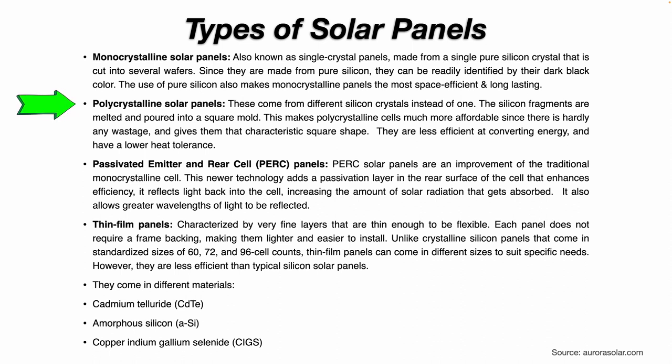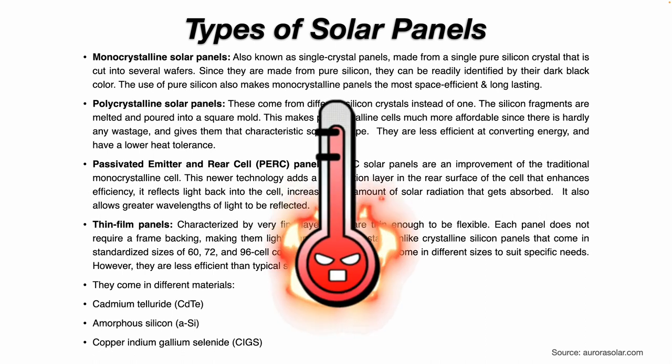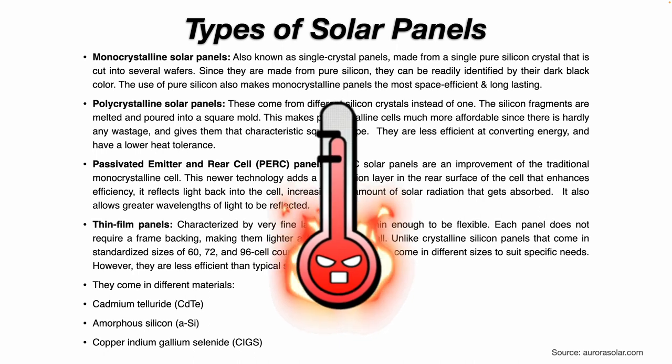Polycrystalline solar panels come from different silicon crystals instead of one. The silicon fragments are melted and poured into a square mold. This makes polycrystalline cells much more affordable since there is hardly any wastage compared to monocrystalline panels, and gives them that characteristic square shape. They are less efficient at converting energy and have a lower heat tolerance, so in really hot applications or hot climates, that needs to be considered.